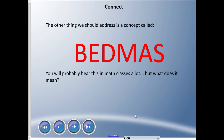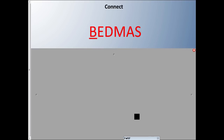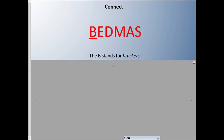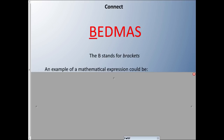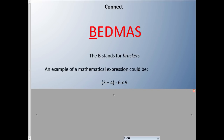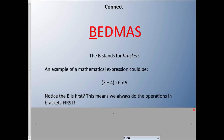The second thing we need to address is a concept called BEDMAS, and you're going to hear this a lot in math classes. The B stands for Brackets. An example of a mathematical expression using brackets could be: (3 + 4) − 6 × 9. That's a multiple-operation problem. Since B is first in BEDMAS, we always do the operations in brackets first — so 3 + 4 happens before the multiplication.